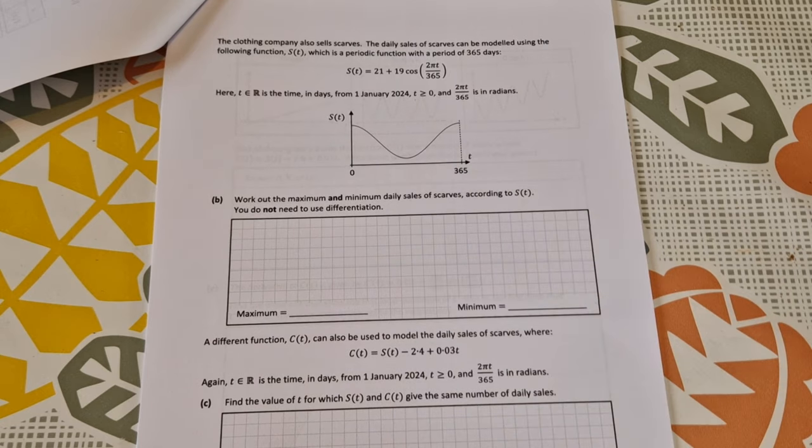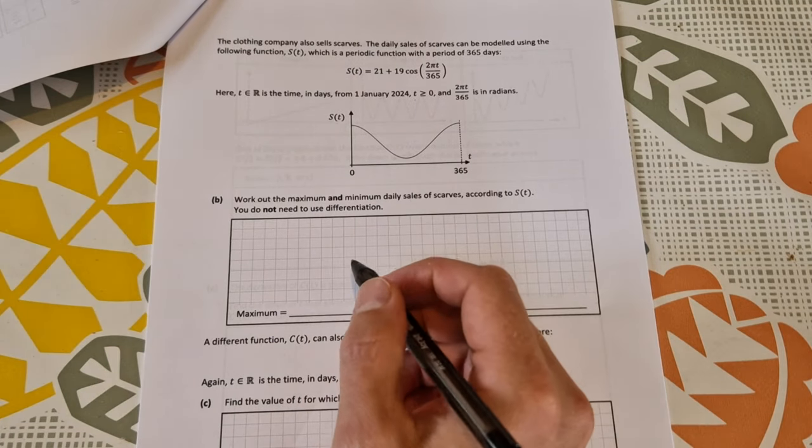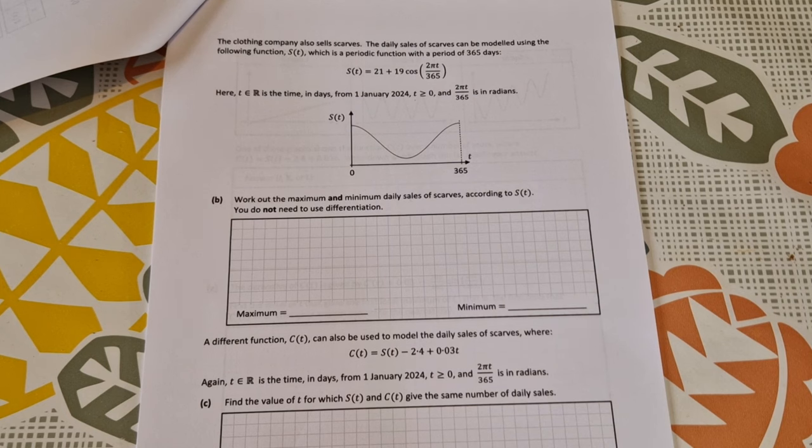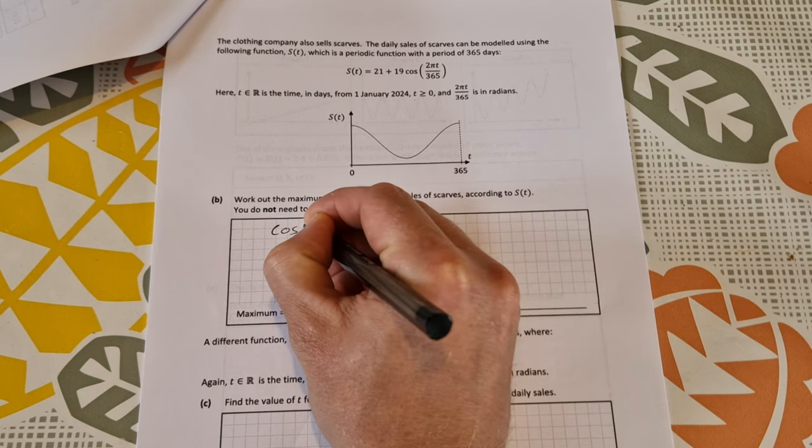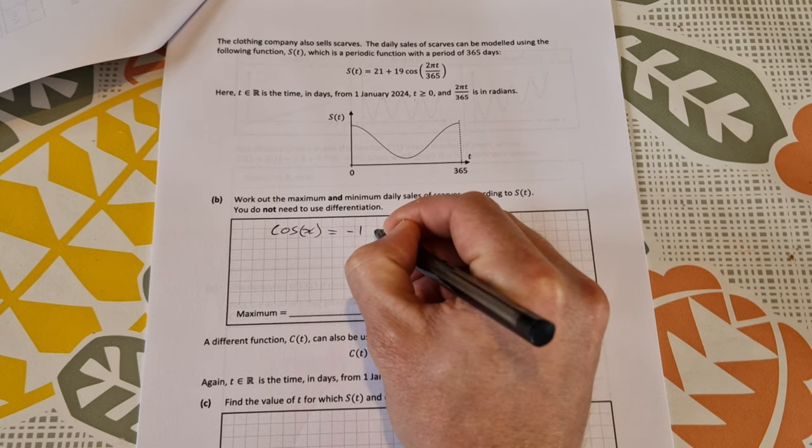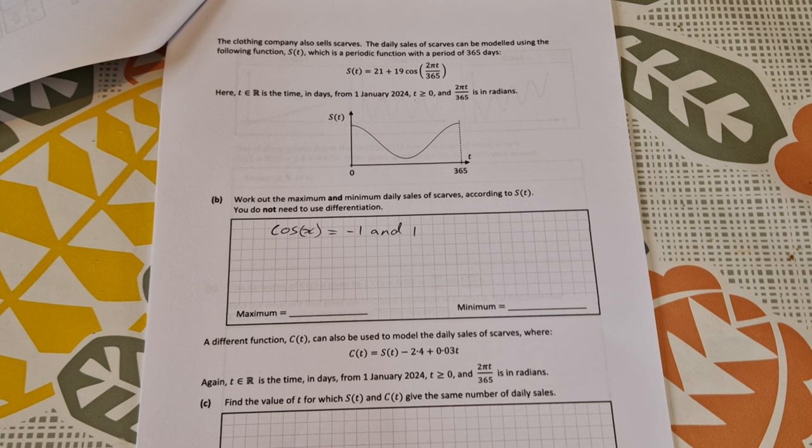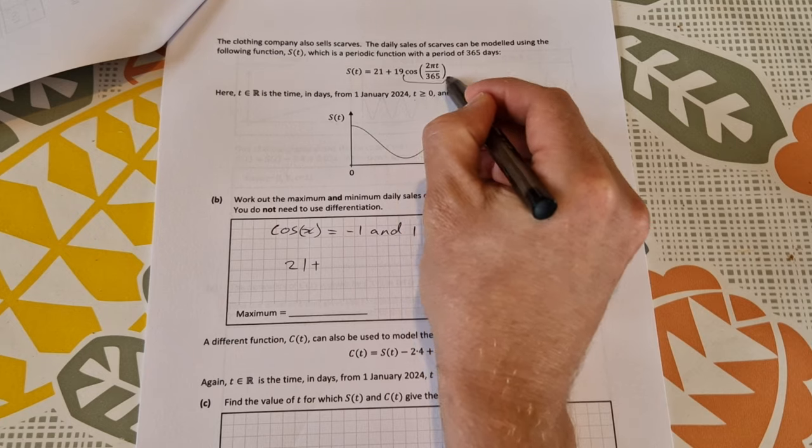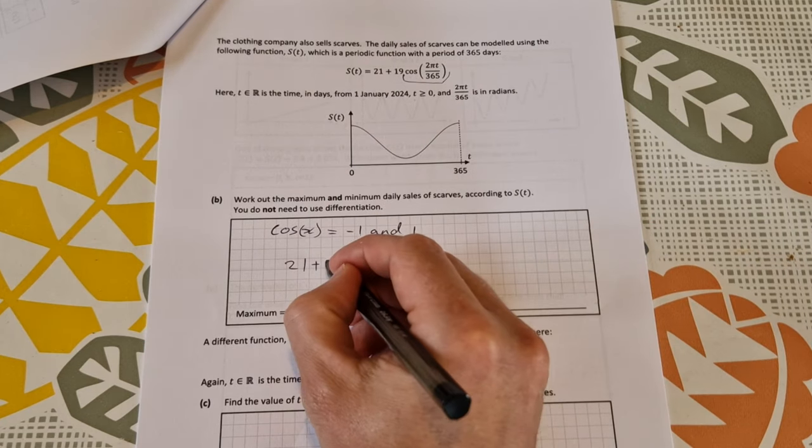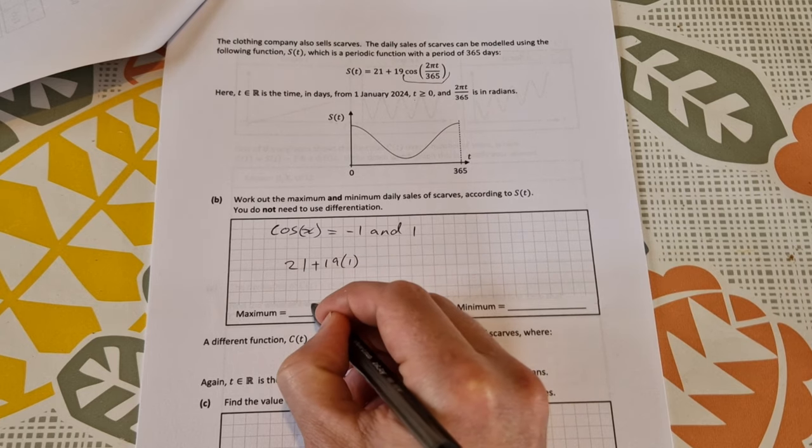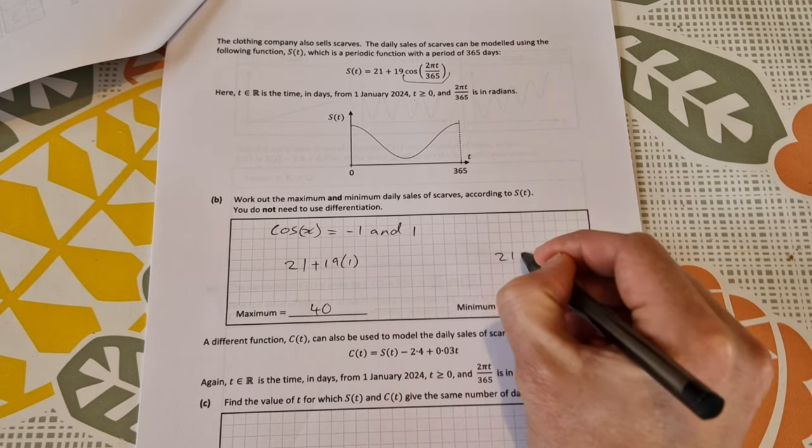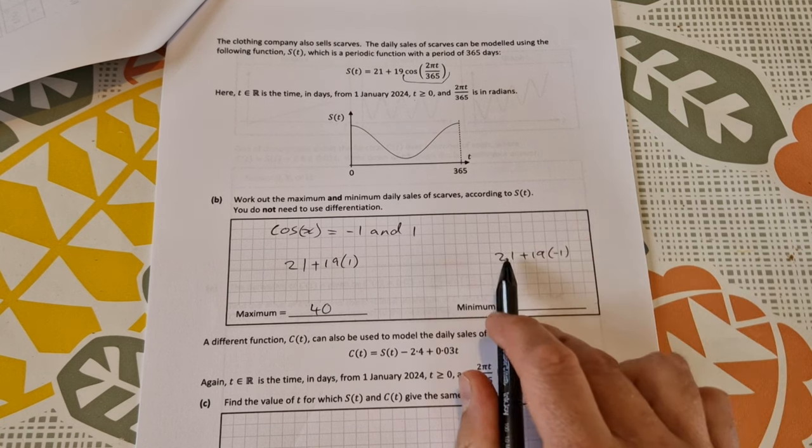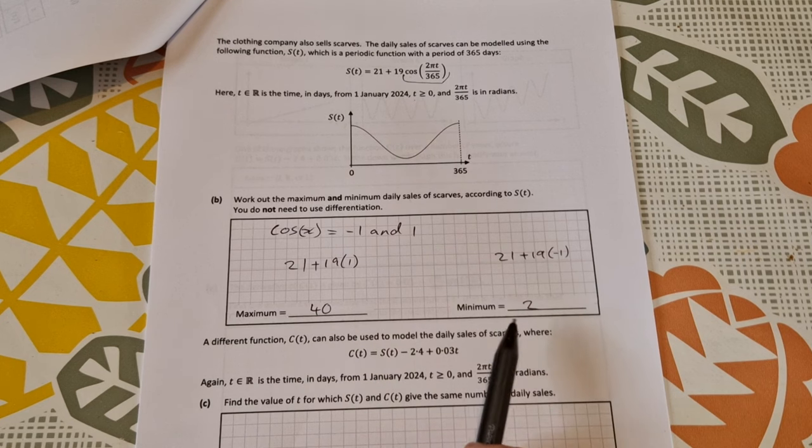The minimum is going to be in here and the maximum is at these points. You do not need to use differentiation for this, there's an easier way. We know that a cosine function has a maximum and minimum. Cosine of x has a maximum between minus 1 and 1, so we can just sub in minus 1 to get the minimum and 1 to get the maximum. That'd be 21 plus 19 times 1, which gives us a maximum of 40. For the minimum, it's 21 plus 19 times minus 1, so that's 21 minus 19 equals 2. Maximum 40, minimum 2.